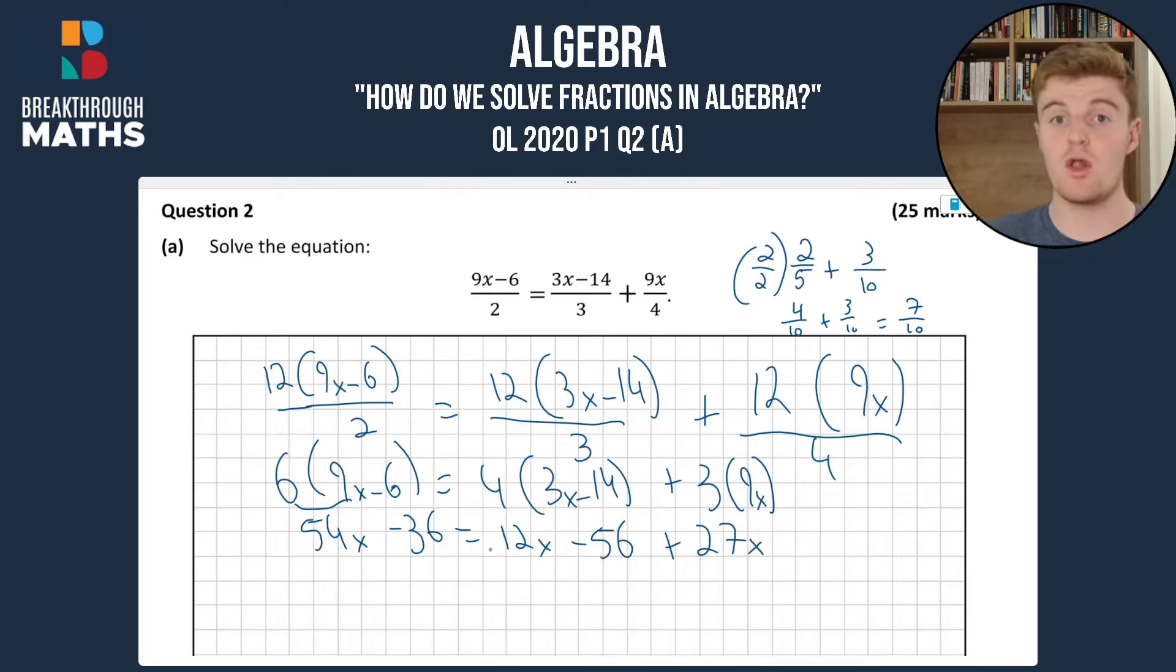So now we can bring all our x's to one side and all our constants to the other. So we're going to have 54x minus 12x minus 27x equals plus 36, we'll bring this one over, minus 56.